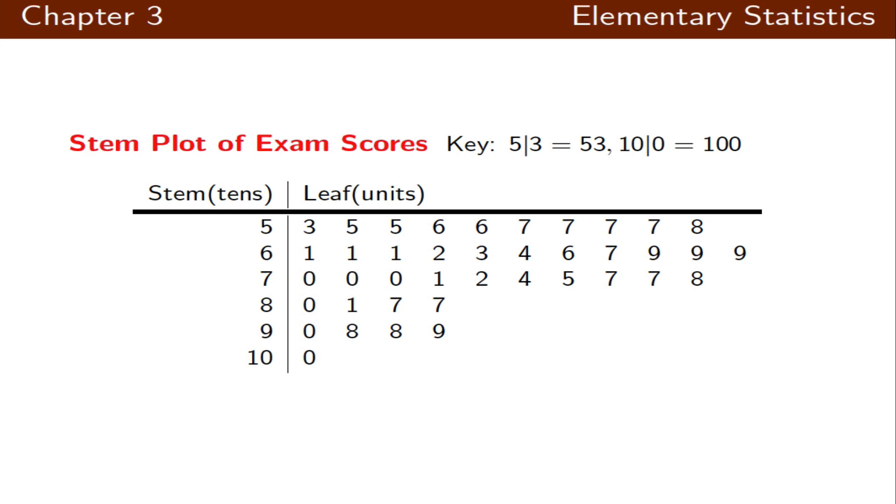This is our stem plot for the exam scores. The key says 5 line 3 means 53, 10 line 0 would be 100. As you see, the data is sorted: we have 53, 55, another 55, 56, another 56, and so on. The last row displays 100. The row before the last displays the 90s: 98, 98, 98, and 99. I hope this presentation helped you understand how to do statistical graphs.